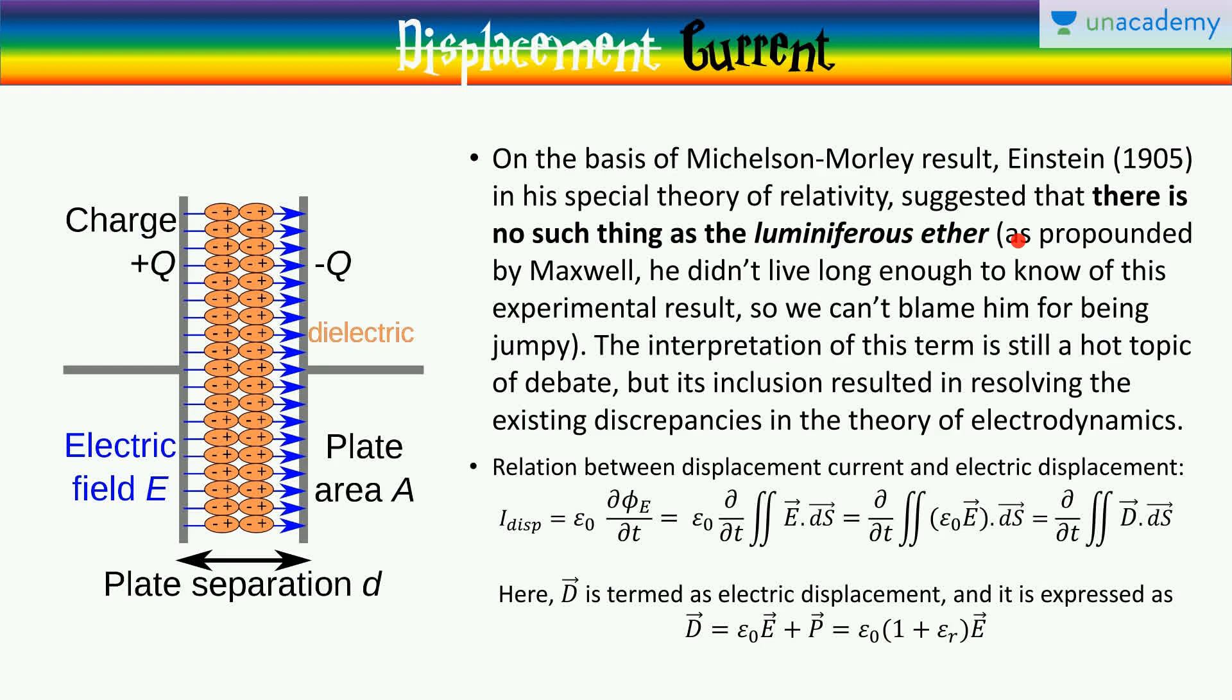He suggested that there is no such thing as a luminiferous ether, as propounded by Maxwell. Now, Maxwell didn't live long enough to know this experimental result, so we can't really blame him for being jumpy, for proposing it. Now, the interpretation of displacement current is still a hot topic of debate today. But its inclusion resulted in resolving the existing discrepancies in the theory of electrodynamics.